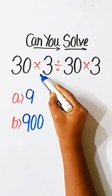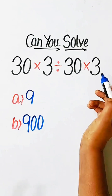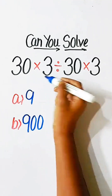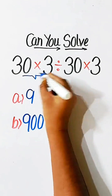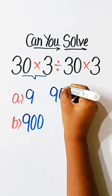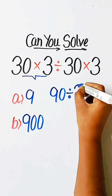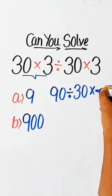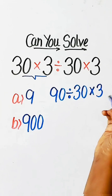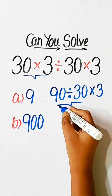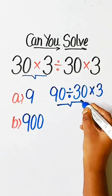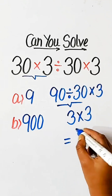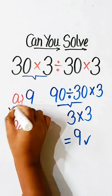Starting from left to right: 30 × 3 = 90, divided by 30 = 3, multiplied by 3 = 9. So 9 will be our correct answer.